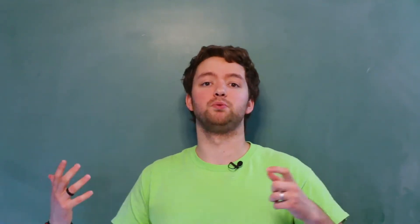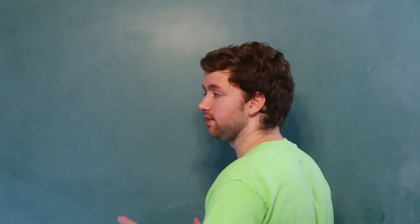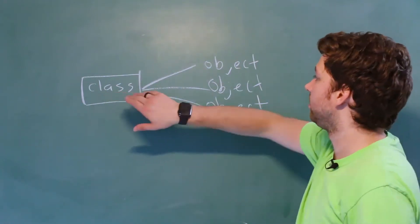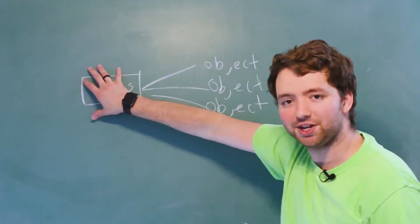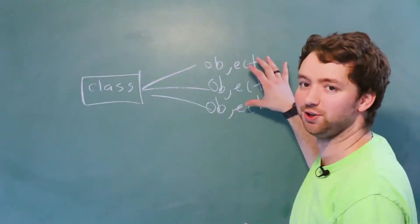So what is a class? Consider a class a blueprint — I like to think of it as a cookie cutter. When you take a cookie cutter, you can create numerous cookies with it. That's what a class is. The cookies that we create are known as objects, so it looks a little something like this: we have one class, each one of these is known as an object. This will be the cookie cutter; these will be the cookies.